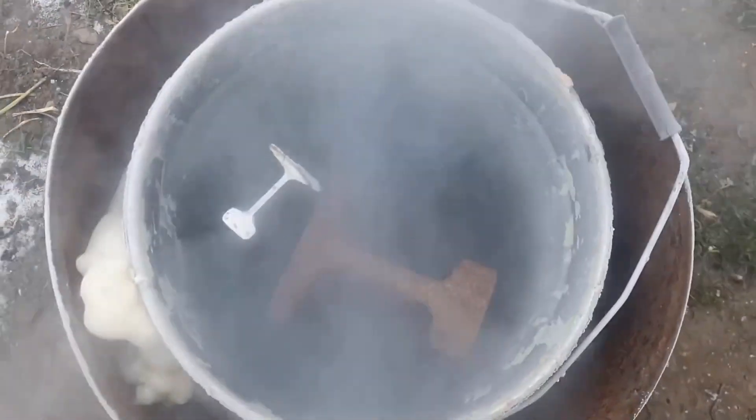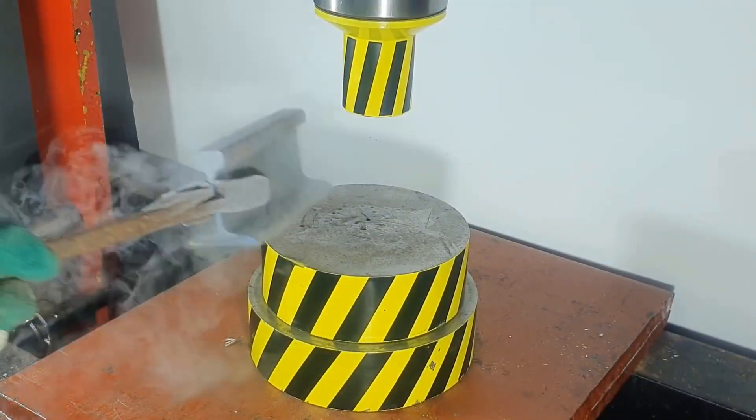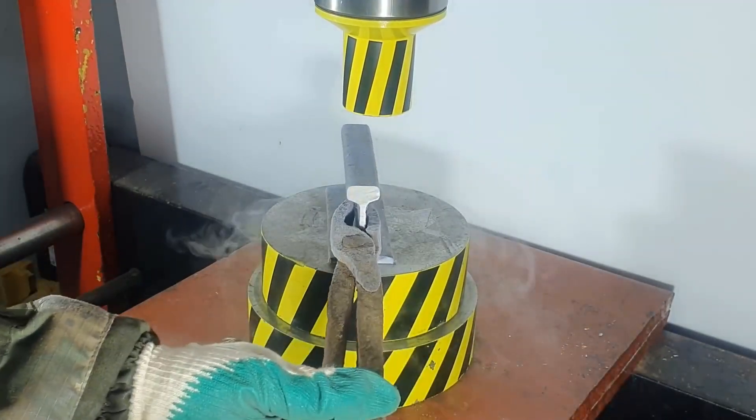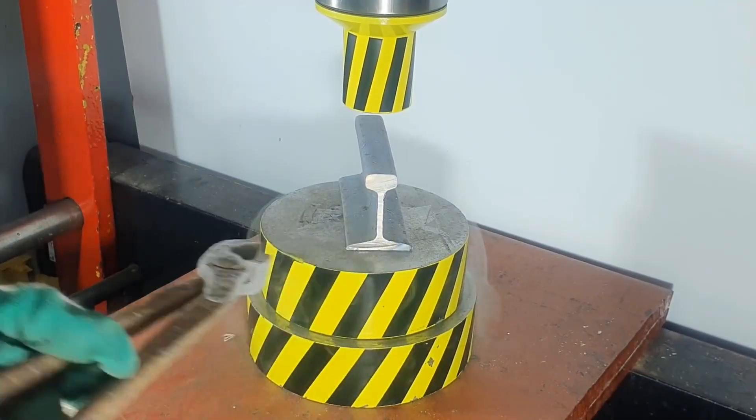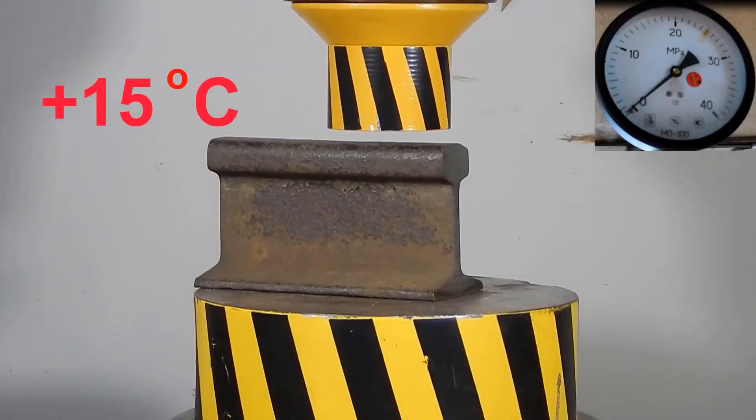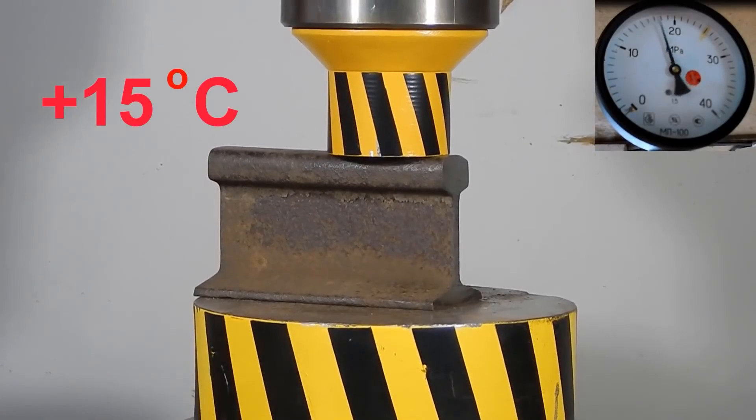In total these pieces of iron lay in liquid nitrogen for almost two hours. To begin with, let's try to crush such a small rail. Once we already pressed such a rail not cooled, it took almost a maximum load of 90 tons to destroy it. Let's see how a cooled rail behaves.